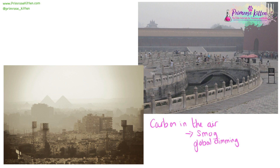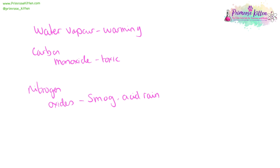Too much carbon in the air is going to lead to large levels of smog and global dimming. This is particularly prevalent in developing countries — when I was in Beijing, it was really hard to see out the window because it was so smoggy. Water vapour is going to contribute to the warming of the planet, carbon monoxide is a toxic gas, and nitrogen oxides are going to contribute to both smog and acid rain.